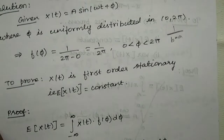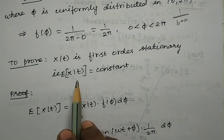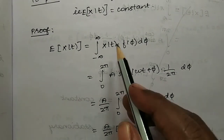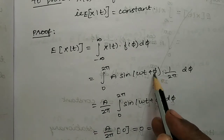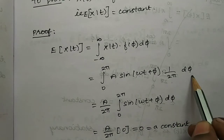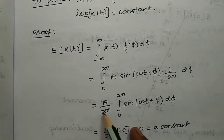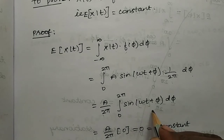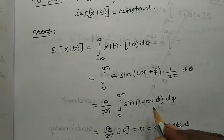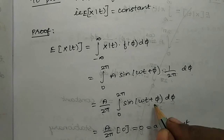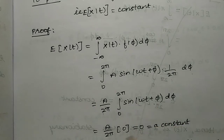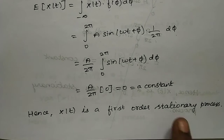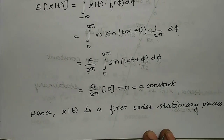Now we find E[x(t)]: x(t) = A sin(ωt + φ), multiplied by f(φ) = 1/2π, integrated over dφ. Since 1/2π is a constant, it comes outside the integral. Using the result that the integral of sin(ωt + nφ) — here n = 1 — gives 0. So E[x(t)] = 0, which is a constant. Therefore it is a first order stationary process.